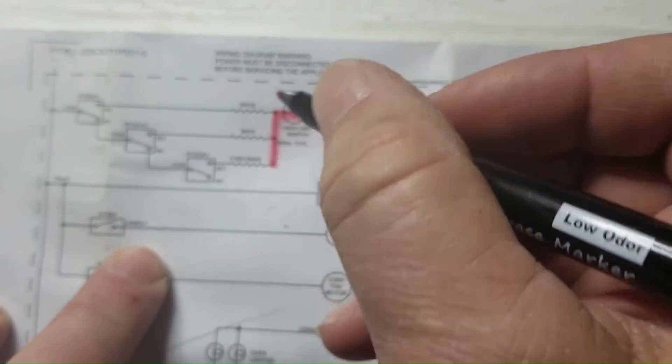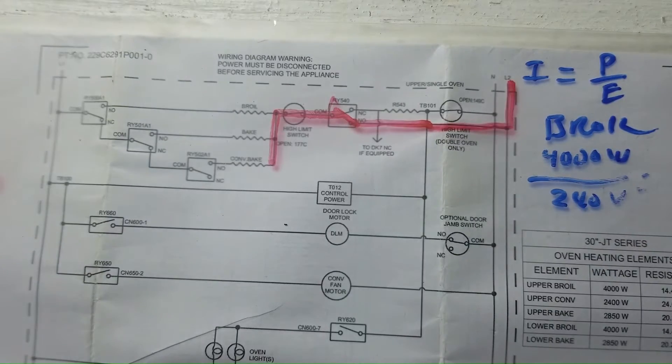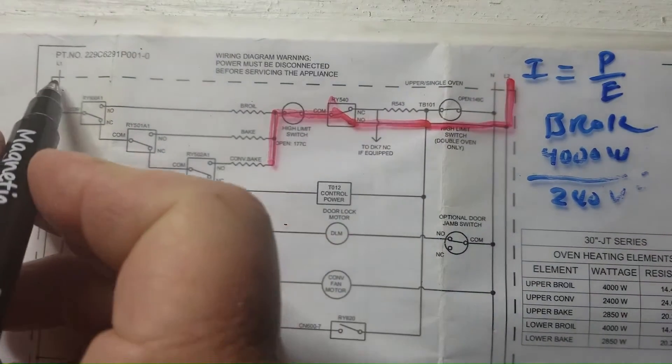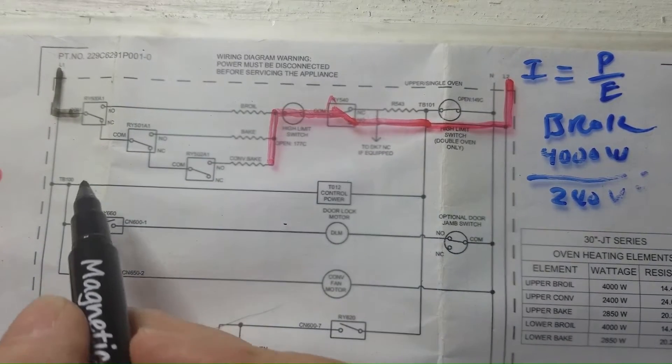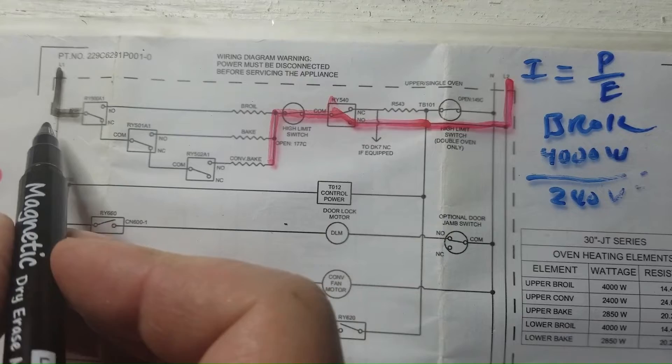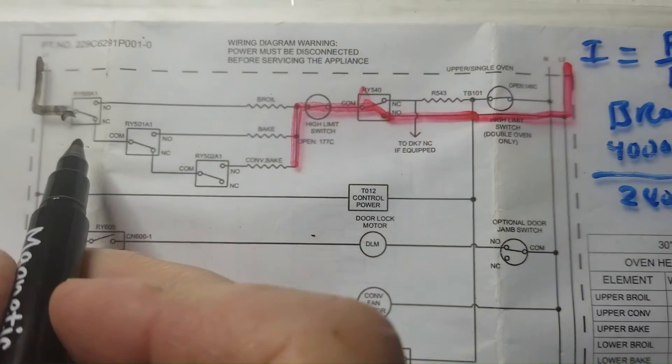That's going to come up against broil, bake, and convection bake. What happens is this voltage is always right there. So during bake, this relay here, the normally closed contact of the broil relay, is used to energize the bake relay.